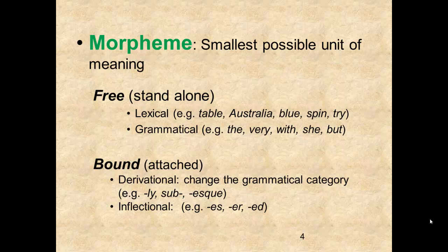Derivational morphemes are base forms or affixes used to change the grammatical category of a word. For example, we can change the grammatical category of the word "slow" from an adjective to an adverb by adding the suffix "-ly."